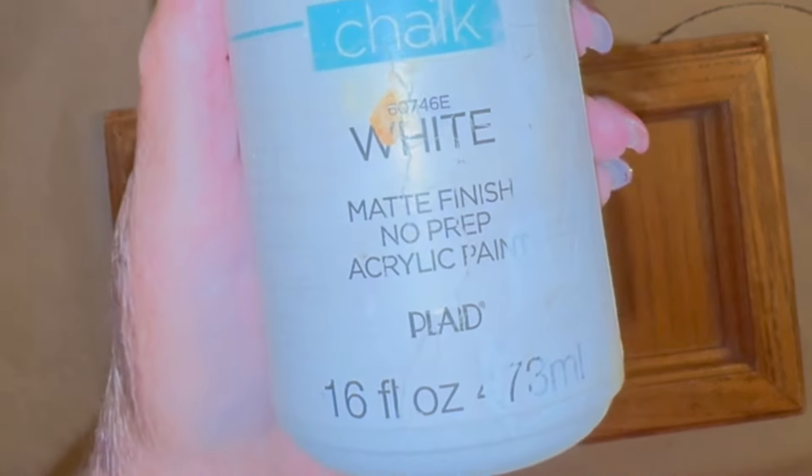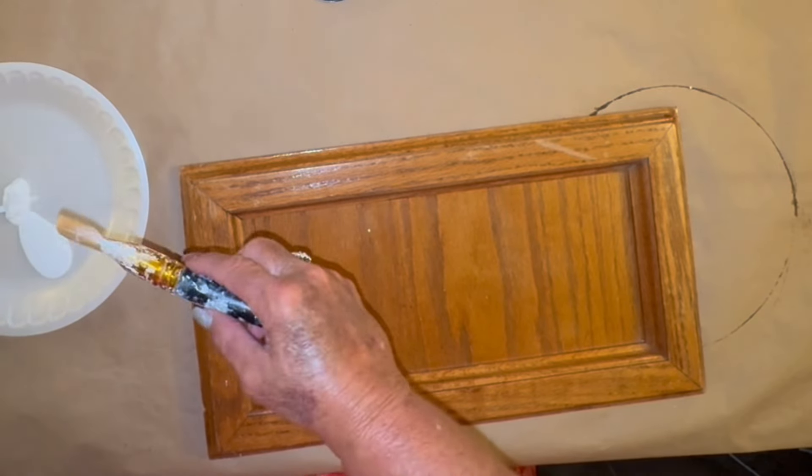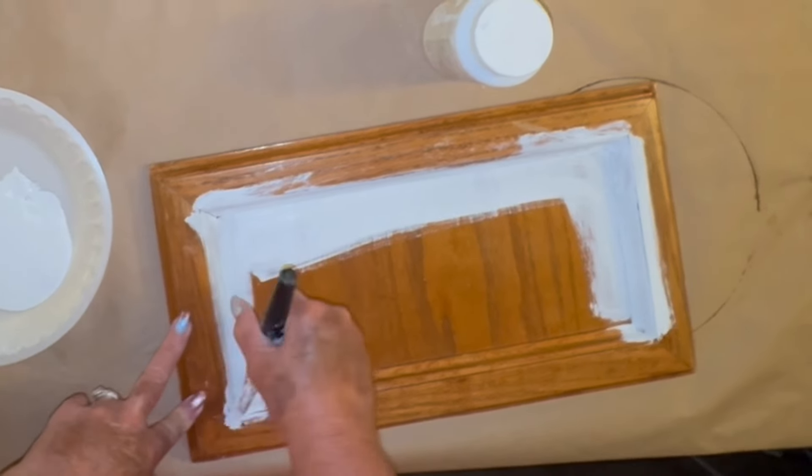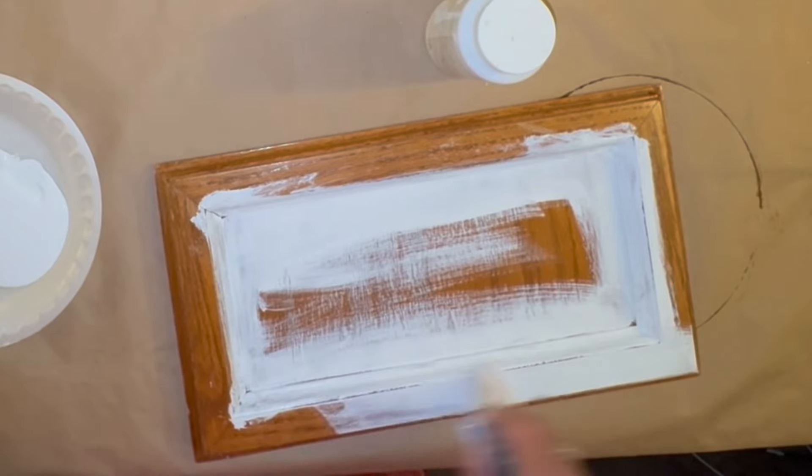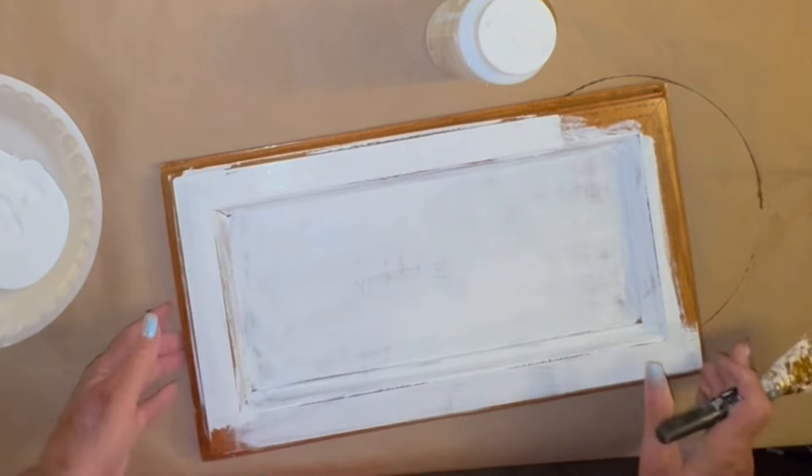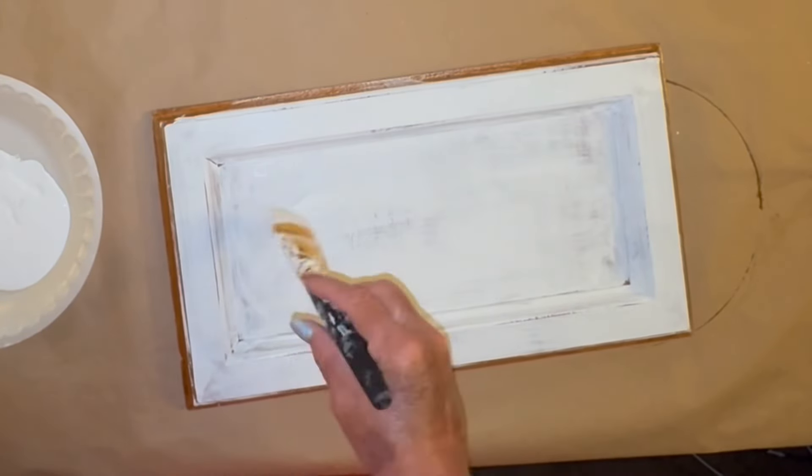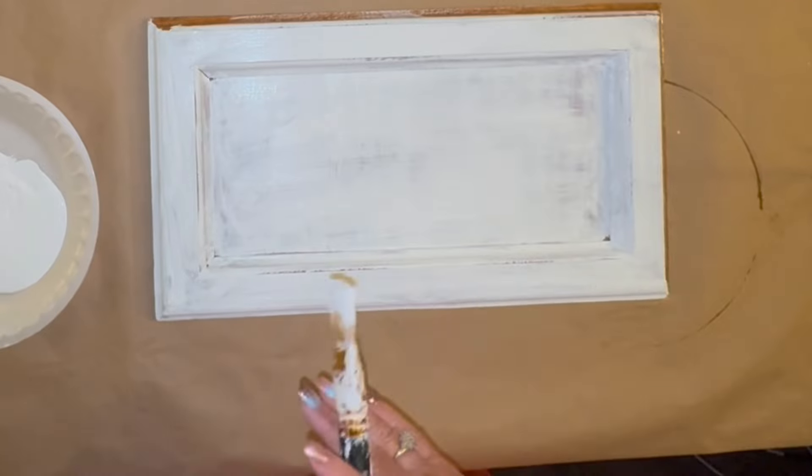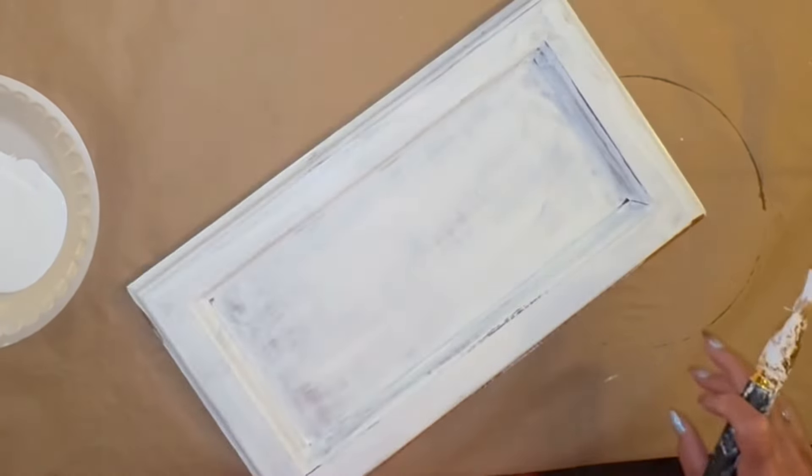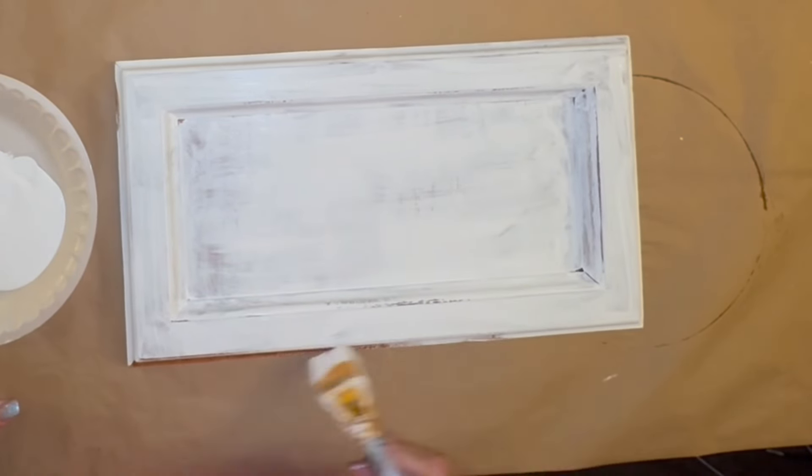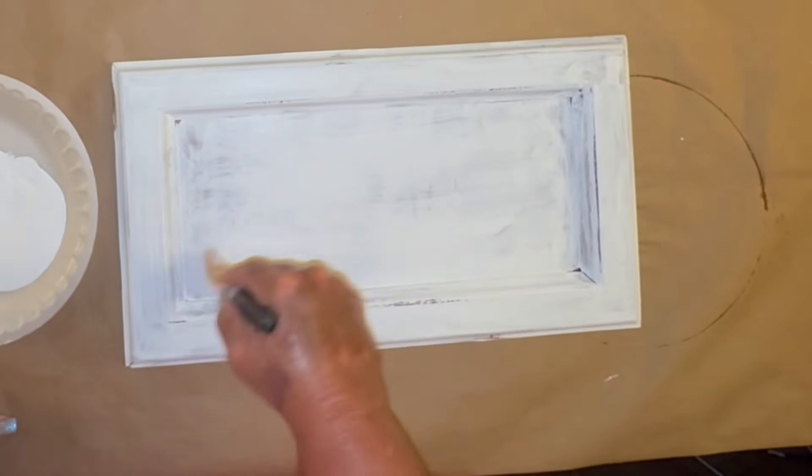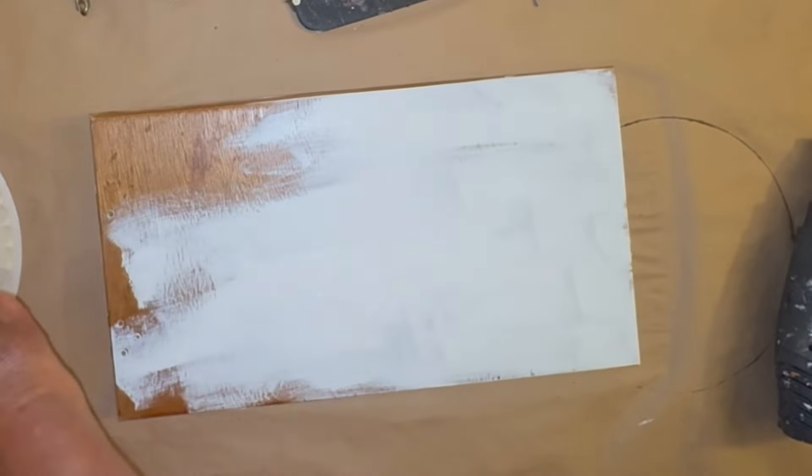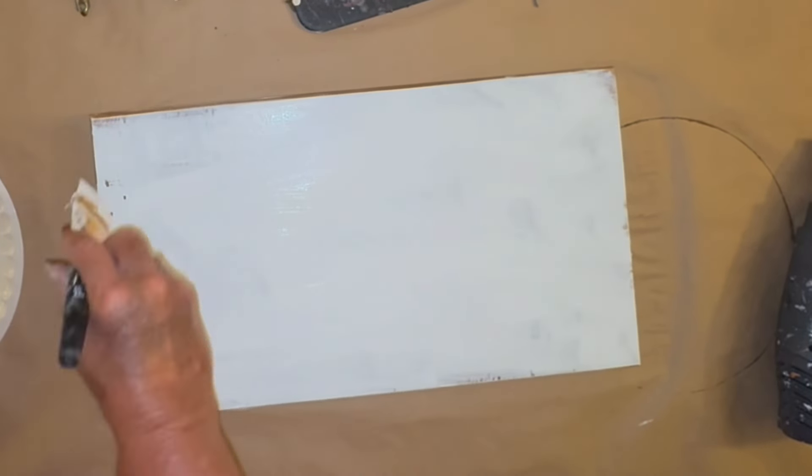So I'm just going to take my white Waverly chalk paint and I'm going to go in and give this two coats. Now I'm going to call it a heavily distressed coat because I'm not worried about the cracks in the crevices and getting every little nook and cranny filled with paint because you know me I like a rustic farmhouse shabby chic feel.